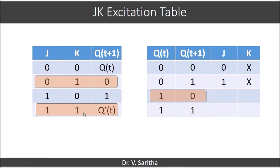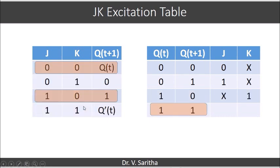Similarly, when both are complement to each other and Q(t+1) equal to 0, the cases indicate J is don't care and K is 1. And then when both are 1 and Q(t+1) equal to 1, the two cases give J as don't care and K is 0. This is the JK excitation table.